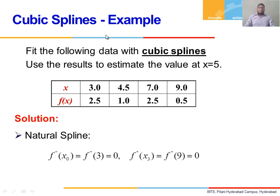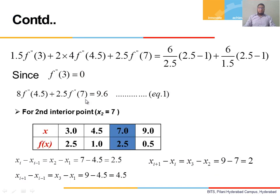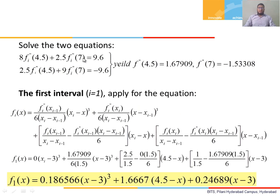Let's look at a cubic spline problem. For a given set of values of x and f(x), we are asked to find the value at x = 5. The boundary conditions for a natural spline are f''(3) = 0 and f''(9) = 0. Using the continuity equation and solving it at the internal point x_1 = 4.5, we obtain one equation after substituting the endpoint condition. Similarly, solving at x = 7, another internal point, we obtain a second equation. So we have two equations and two unknowns, and solving them we get f''(4.5) and f''(7).